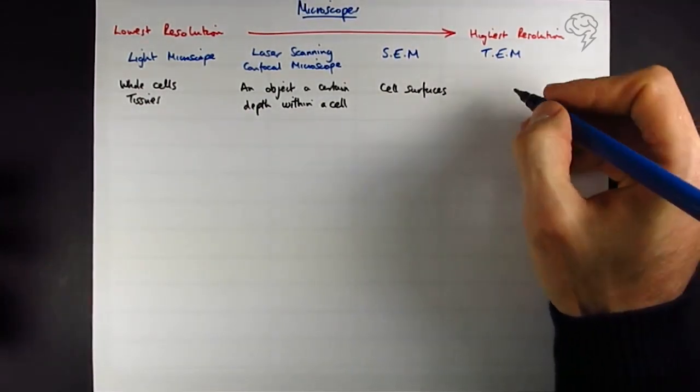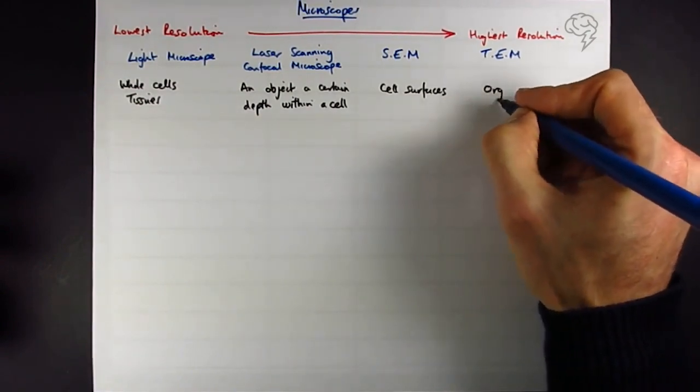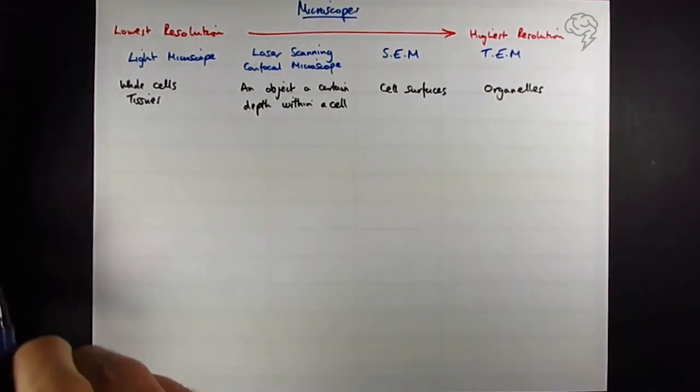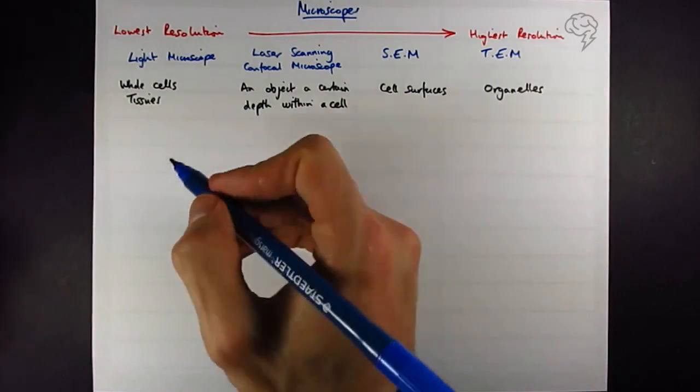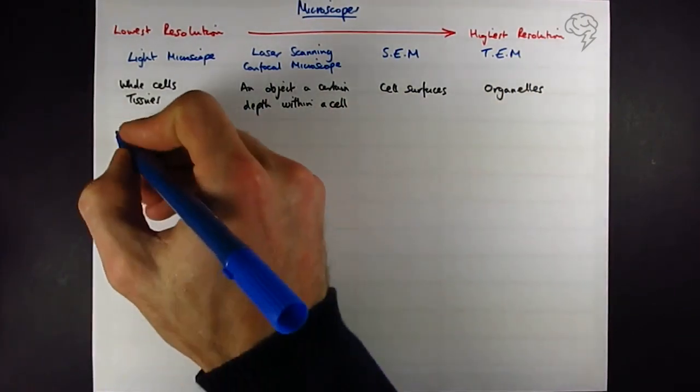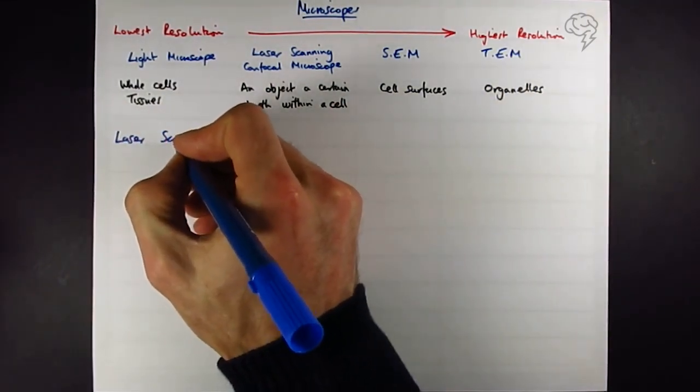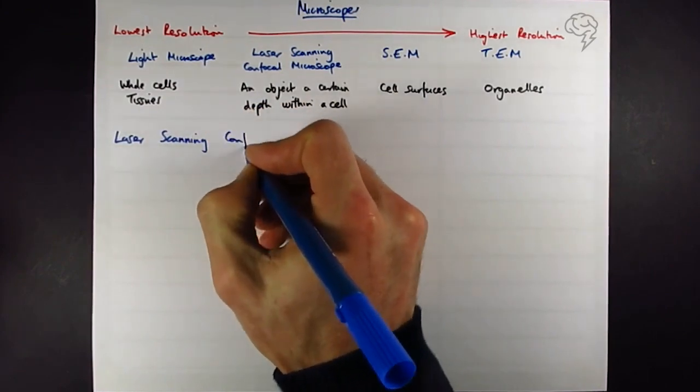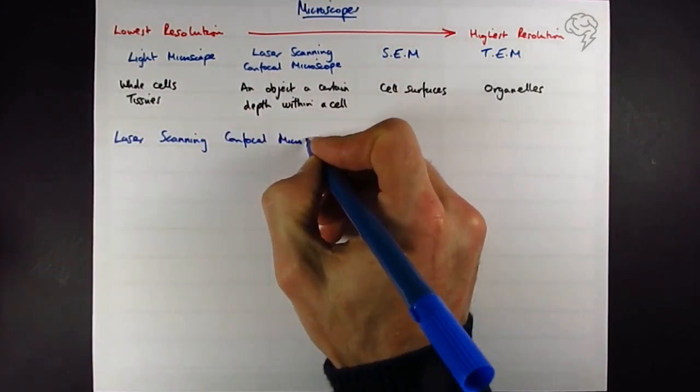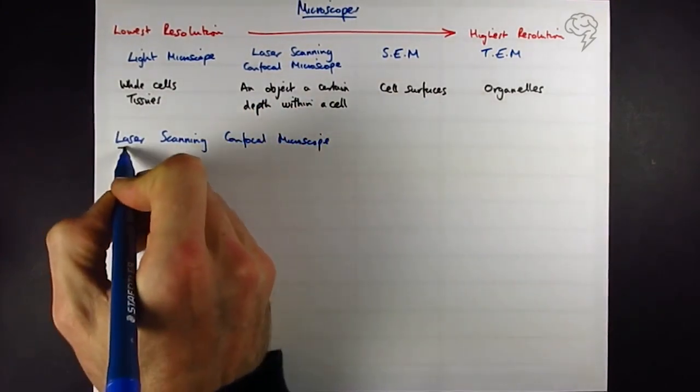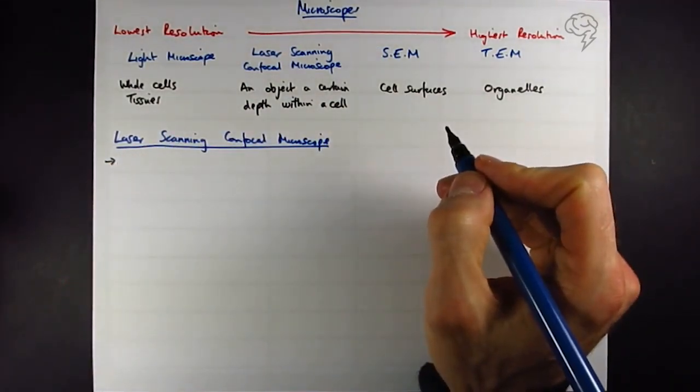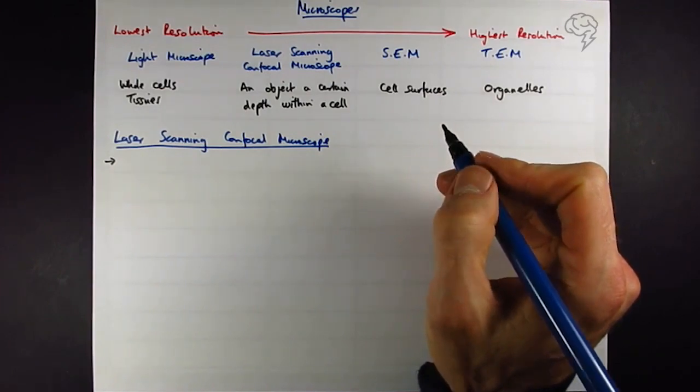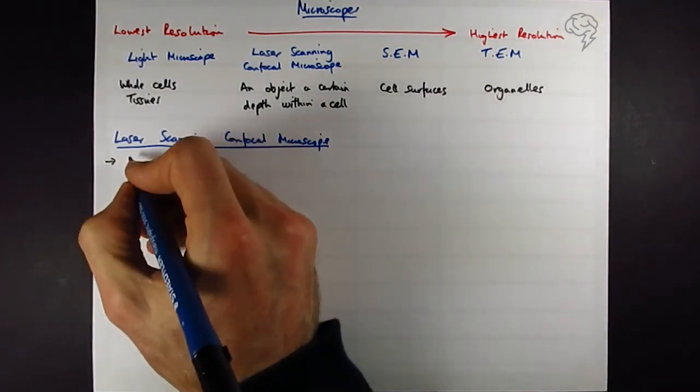And with a transmission electron microscope you can see the organelles. Just a reminder, resolution is the ability to separate two objects. So let's look at the laser scanning confocal microscope. What you do is you attach a fluorescent dye to the cell or to the specimen, the thing or the organelle that you want to look at.